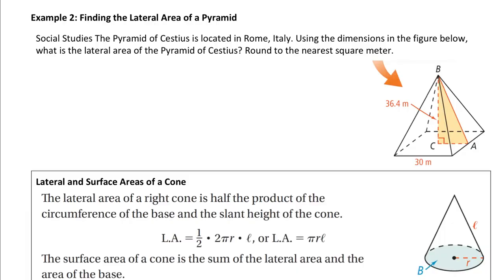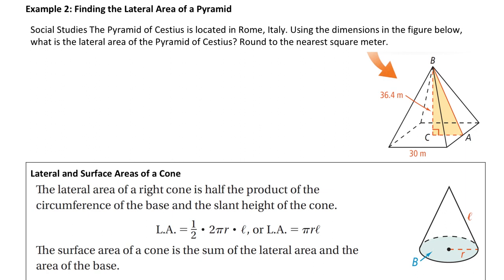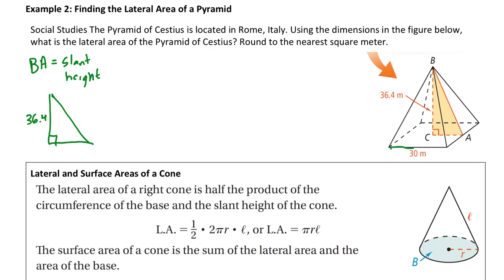Moving ahead, we need to find the lateral area of another pyramid but we are not given the slant height. BA is the slant height and we have to find it based on what we're given: the height of the pyramid and the length of an edge of the base. Redrawing that highlighted triangle, the height is 36.4, and since the base side is 30, the half-base for our right triangle is 15. AB, the slant height, is what we need.